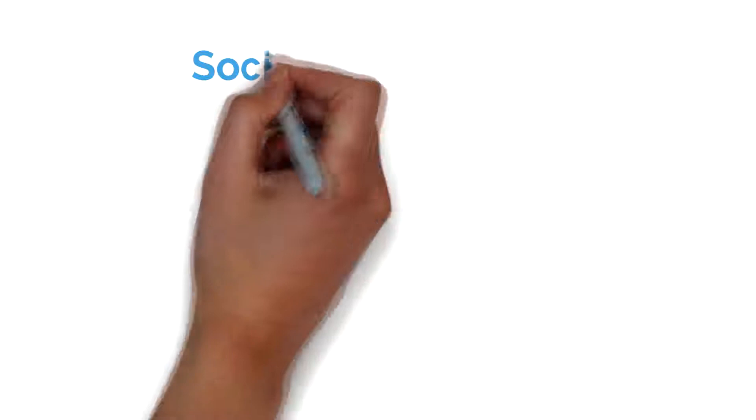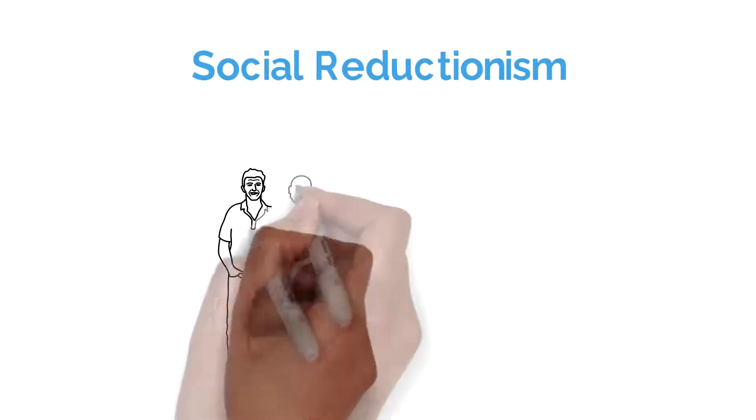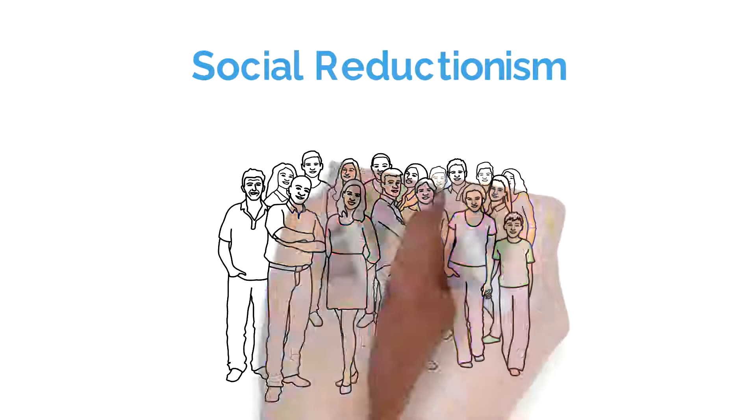Social reductionism argues that all behavior and experiences can be explained simply by the effect of groups on the individual.